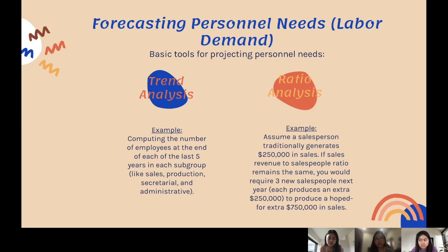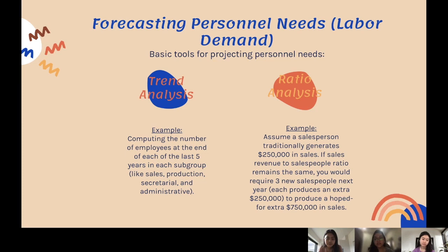The example for trend analysis is computing the number of employees at the end of each of the last five years in each subgroup, like sales, production, secretarial, and administrative. For ratio analysis, the example is: assume a salesperson traditionally generates $250,000 in sales. If the sales revenue to salespeople ratio remains the same, you will require three new salespeople next year, each producing an extra $250,000, with a hoped-for extra $750,000 in sales.